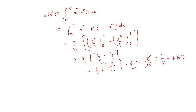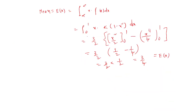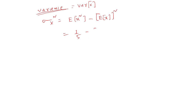Now we can find the variance. Variance = E(x²) - [E(x)]² = 1/5 minus (3/4)² squared. So the variance equals 1/5 minus 9/16, and we can compute this final variance value using the formula E(x²) minus E(x) whole squared.